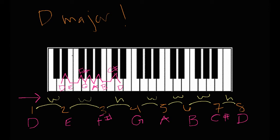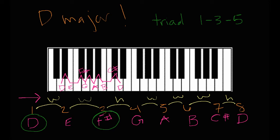Let's go ahead and look at the D major chord or D major triad. The triad, whether it's major or minor, is going to be made up of one, three, five — which are just references to the note numbers in the scale. So we circle one, which is D; three, which is F sharp; and five, which is A. So D major equals D, F sharp, and A.